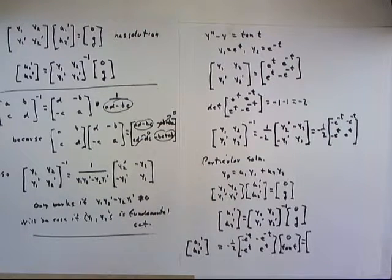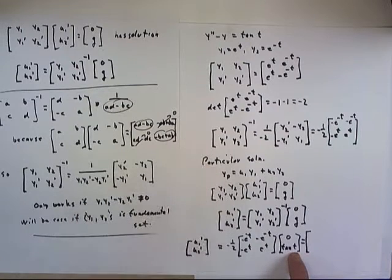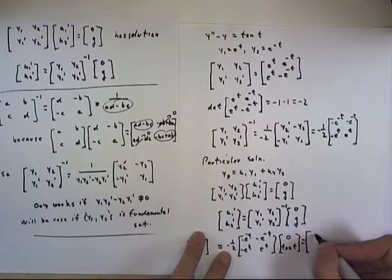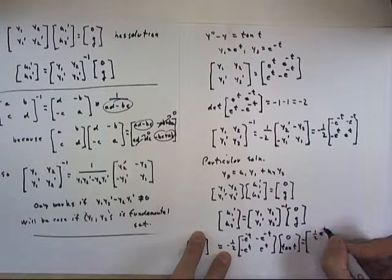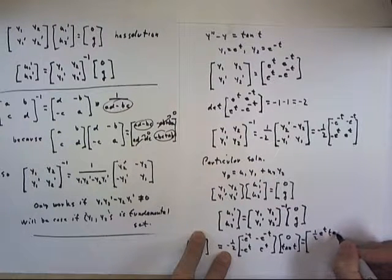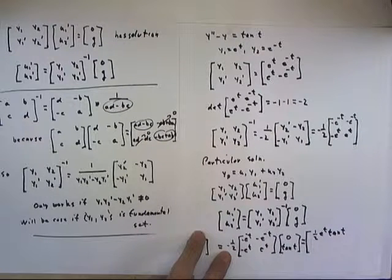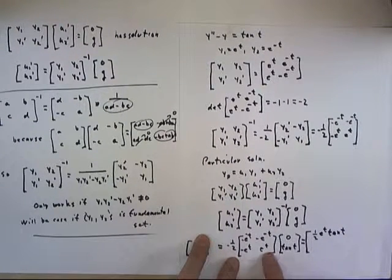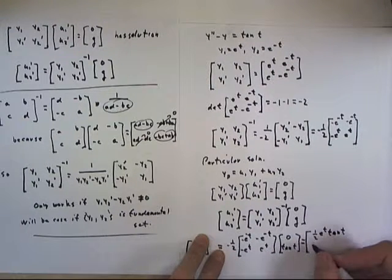The product then is, if we multiply the row by the column, we get negative e to the negative t tangent t. And then we multiply the second row by the column, we get a negative one-half e to the t tangent t.